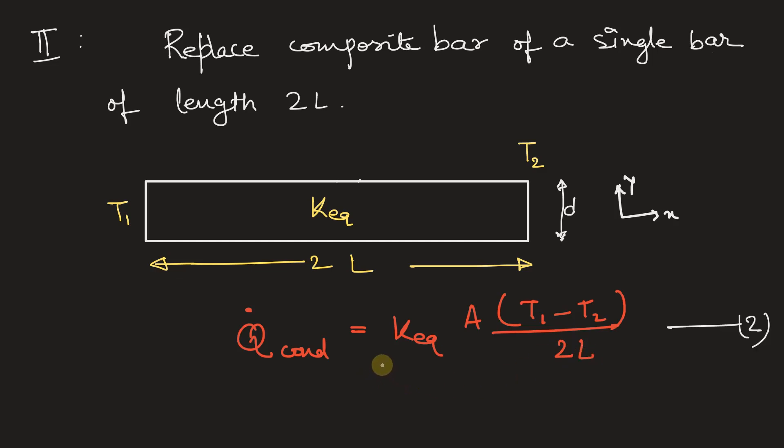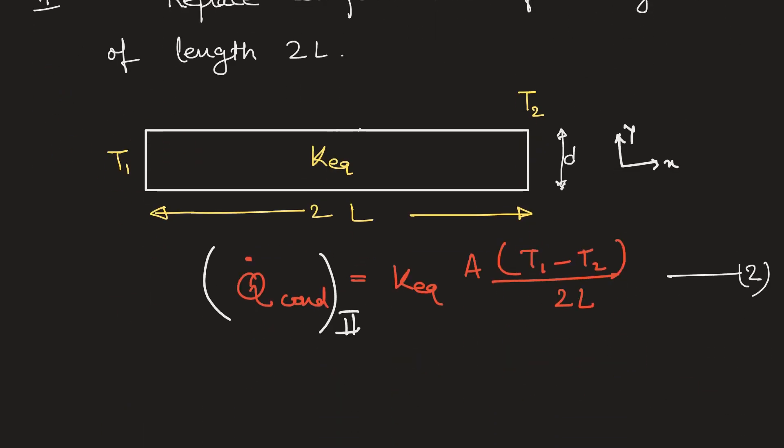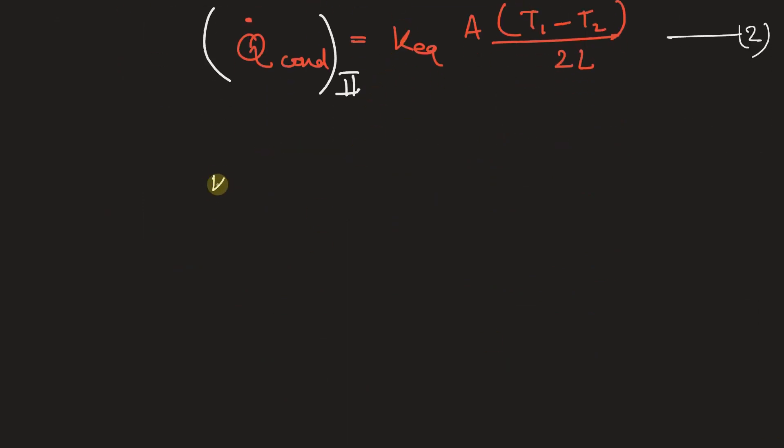According to the question, the heat transfer through both the bars must be same. Let's say this is case 2 and the previous is heat transfer rate 1. From equations 1 and 2, we can write K1 times K2 by K1 plus K2 times A by L times delta T should be equal to K_equivalent times area times delta T by 2L.